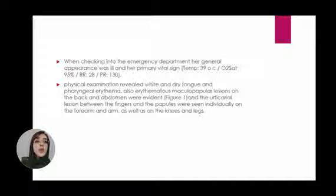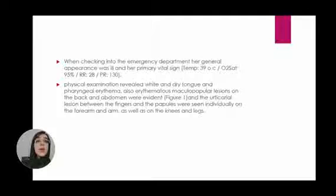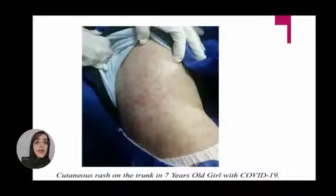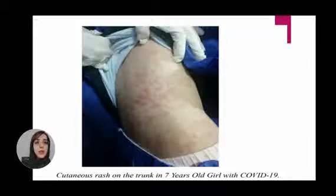Also, erythematous maculopapular lesions on the back and abdomen were evident. Urticarial lesions between the fingers and petechiae were seen individually on the forearm and arm, as well as on the knee and legs. You can see the maculopapular lesions on the abdomen in this figure.